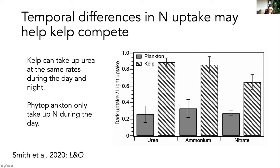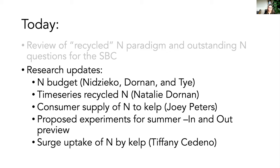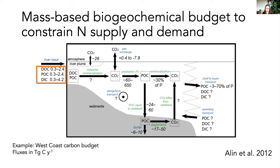That's the background for this theme. I'm used to thinking about things as a box-and-arrows person, with units in mass per unit time, and I thought it would be a worthy goal to put something like this together for nitrogen in the LTER study area. The work by Fram and Sally McIntyre was a great start on this, and I took a first pass at trying to constrain what these arrows are in terms of our study area.